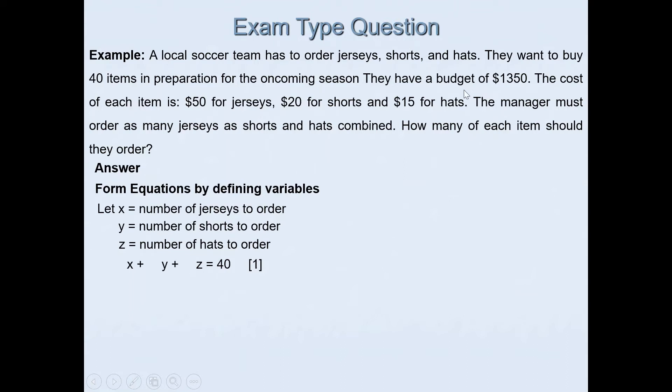We are given a budget of $1,350 and the price for each item. If I put that information together we get 50x + 20y + 15z = 1350. That's our second equation.